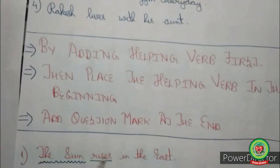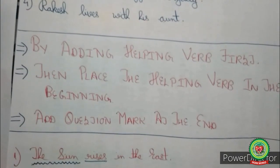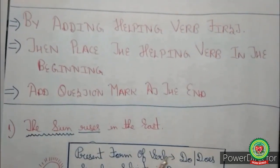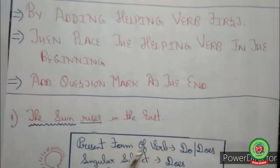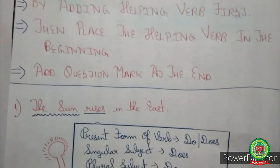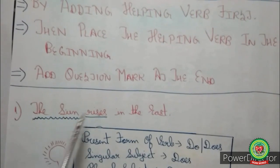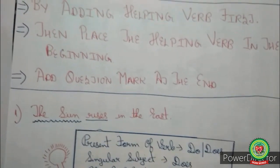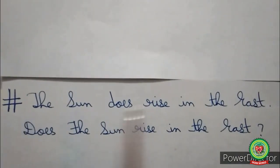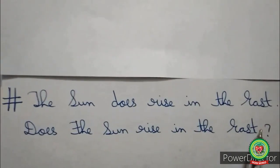Take the sentence 'The sun rises in the east.' Rises is the main verb — it is the present form, and the sun is a singular subject. So we use does as the helping verb: 'The sun does rise in the east.' Now we place does at the beginning: 'Does the sun rise in the east?' For the sentence 'They went to the park yesterday,' went is the past form of verb. Whenever the past form is present we always use did as the helping verb: 'They did go to the park yesterday.' Placing did at the beginning: 'Did they go to the park yesterday?'